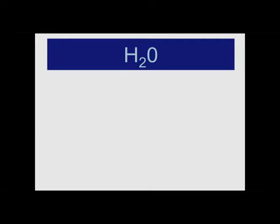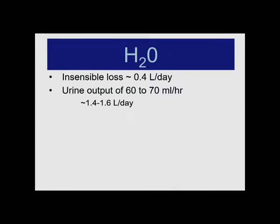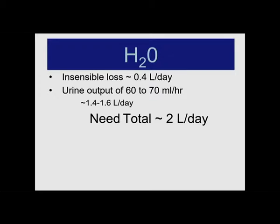What are the needs? First is water — we are water-based solutions. Whenever you hear about people looking for life on another planet, they are looking for water because our chemistry is all water-based. You lose about 0.4 liters per day in insensible losses, and urine output is 60 to 70 milliliters per hour, which is another 1.4 to 1.6 liters per day — so you need roughly two liters. That will change if you are walking in the desert in 56-degree weather, where water loss is rapid and large, but in standard air-conditioned buildings you are losing less than two liters a day.